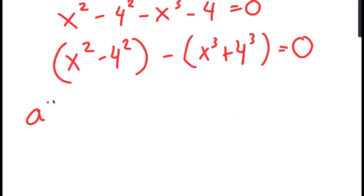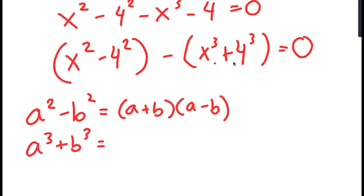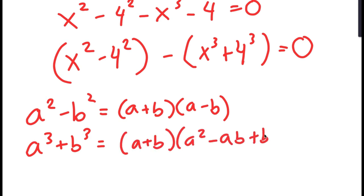We put the plus because the negative sign distributes. Now, if I have something in the form a squared minus b squared, this is equal to a plus b times a minus b. And if I have something in the form a to the power of 3 plus b to the power of 3, this is equal to a plus b times a squared minus ab plus b squared.